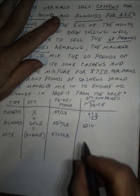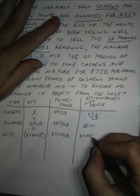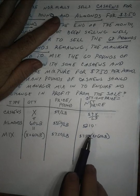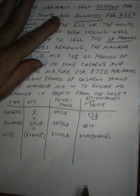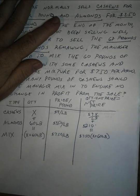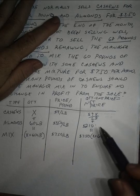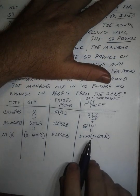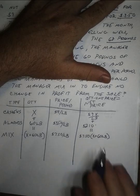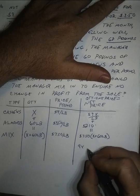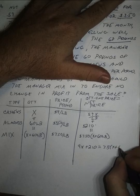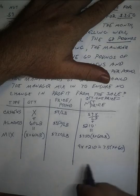I don't want more or less profit for selling the same amount — that's how the problem is set up. So I multiply price by quantity for the mix: 7.50 times (X plus 60 pounds). The amount of money I make off the mix should be the same as if I were selling them separately. So I can add the dollar values and set them equal. The equation becomes: 9X plus 210 equals 7.5 times (X plus 60).